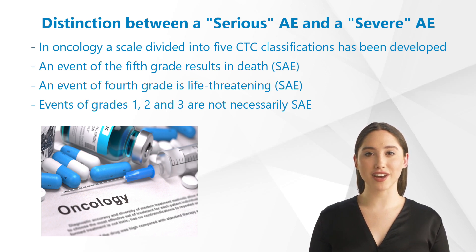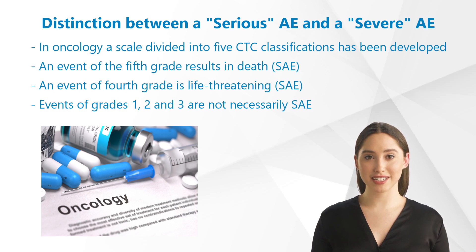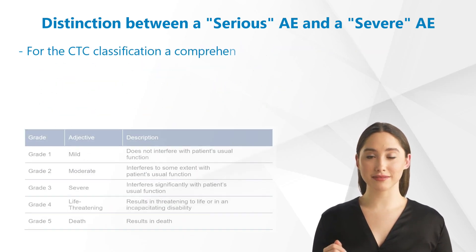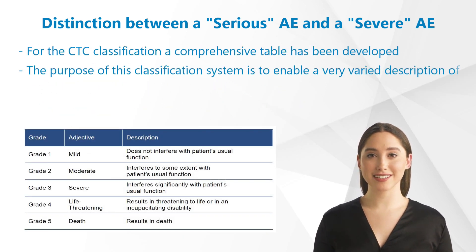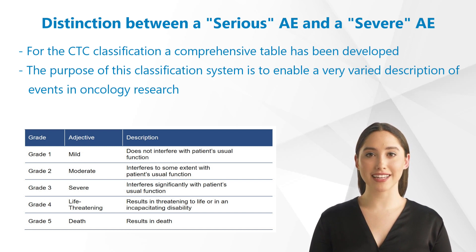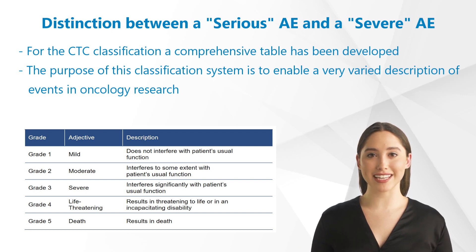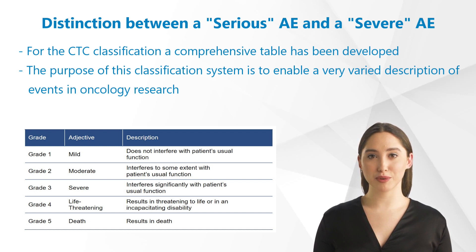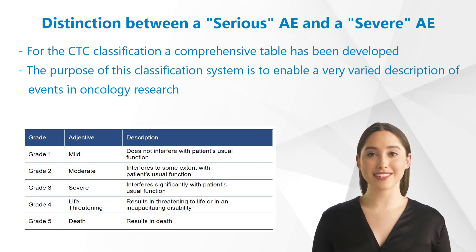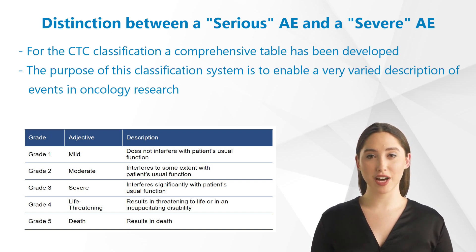In contrast, events of grades 1, 2, and 3 are not necessarily serious adverse events. For the CTC classification, a comprehensive table has been developed which is used to define laboratory values, symptoms, actions against the event, tolerated doses of study treatment, and much more. The purpose of this classification system is to enable a very varied description of events in oncology research.